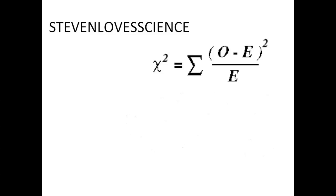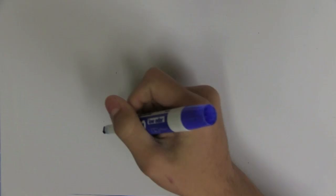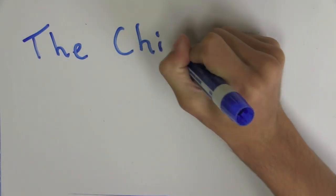Hello everyone, I'm Stephen and you're watching Stephen Love Science, and in today's video we're going to discuss the proper use of the chi-square test, a very useful mathematical approach to determine the validity of a genetic hypothesis.